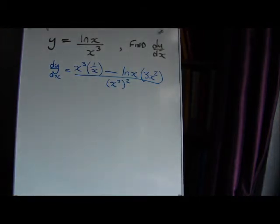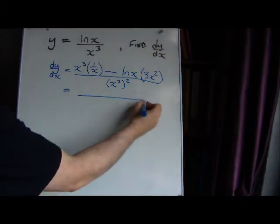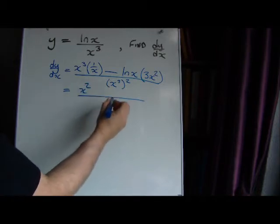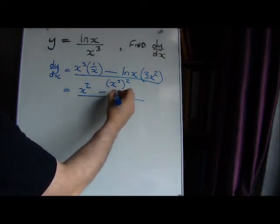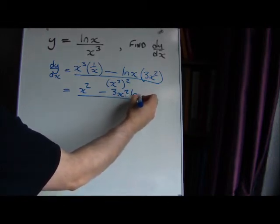All we've got to do now is simplify the algebra. On the top, we're going to have x cubed times 1 over x. Well, that will just give us x squared, and there isn't a lot we can simplify about that, so it's going to give us 3x squared log x.